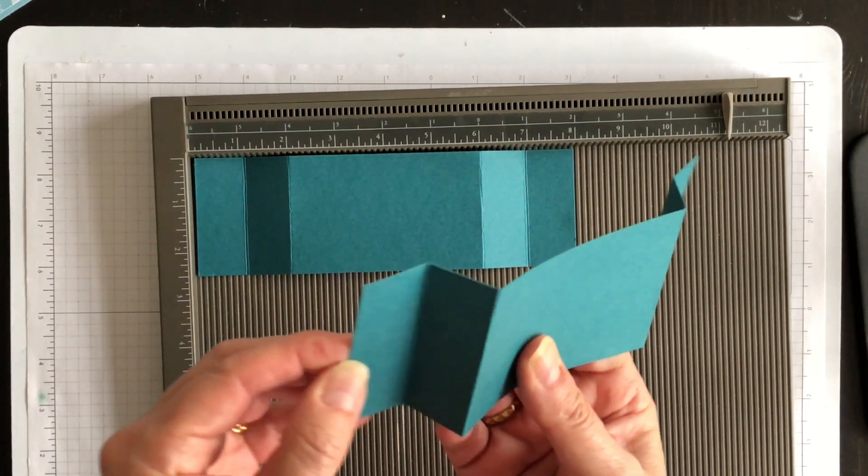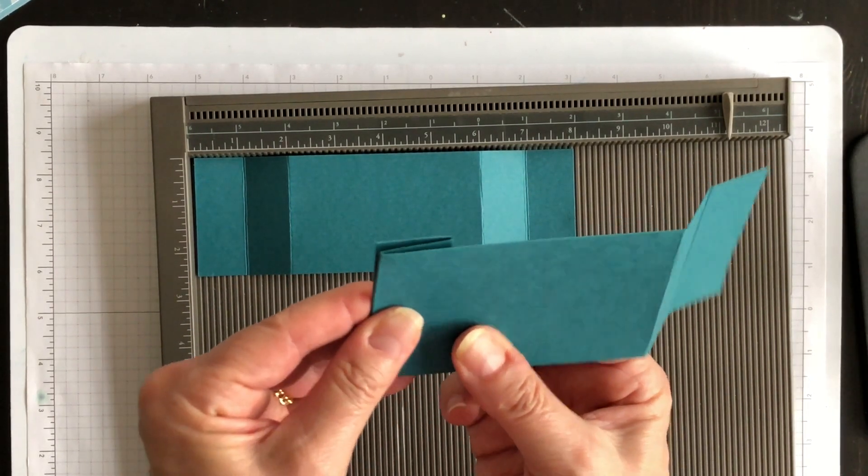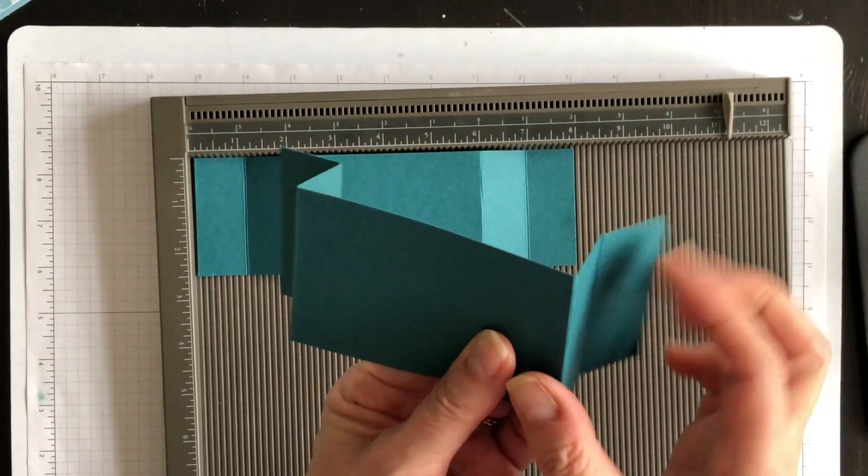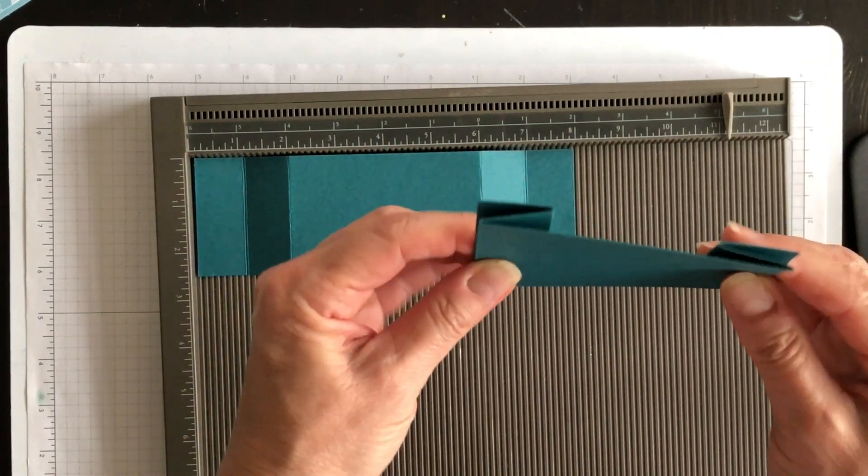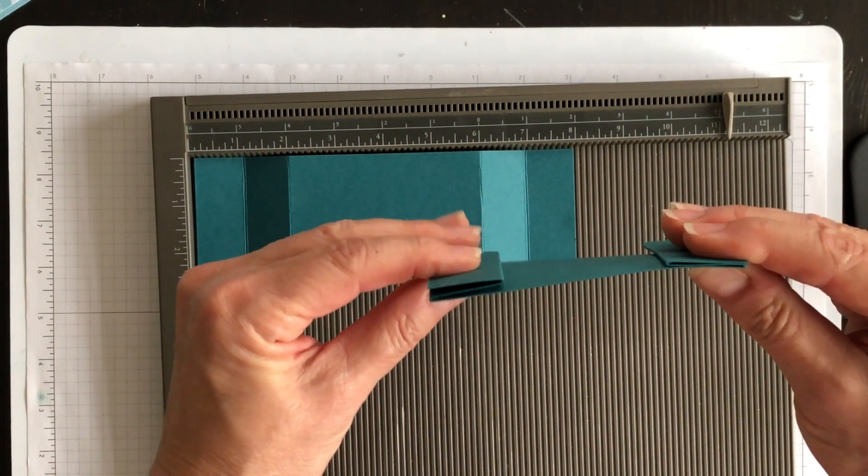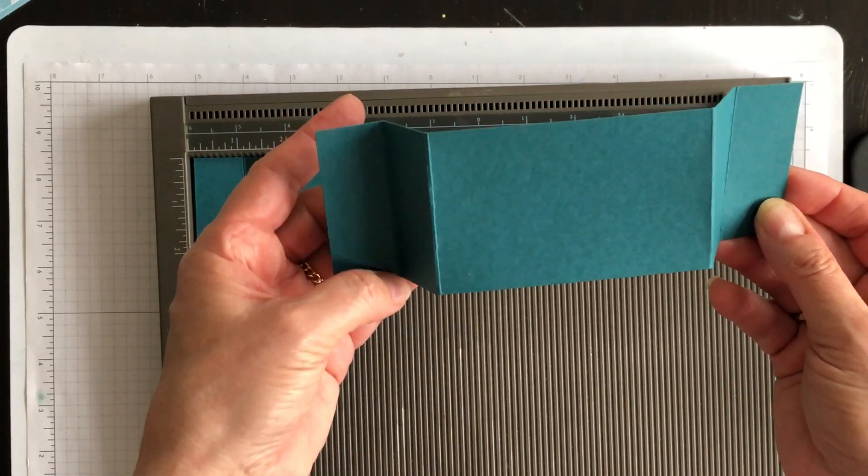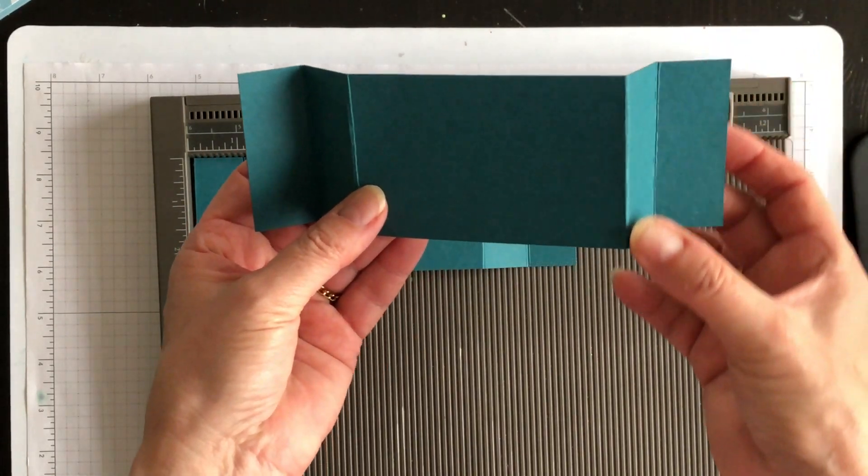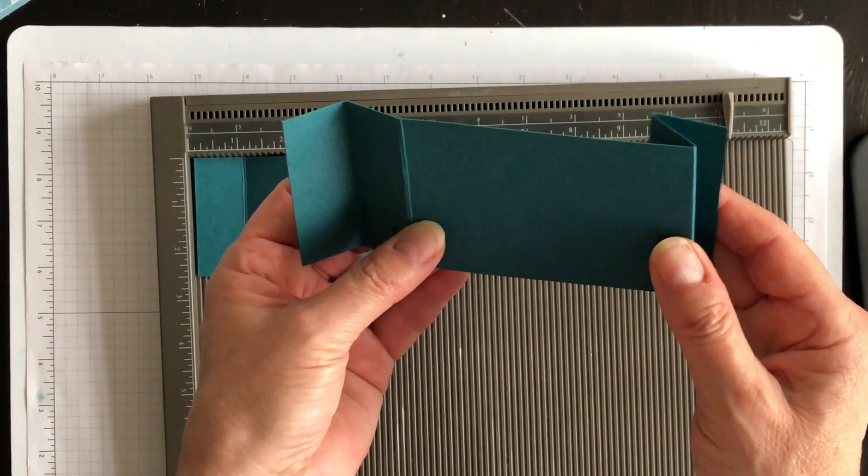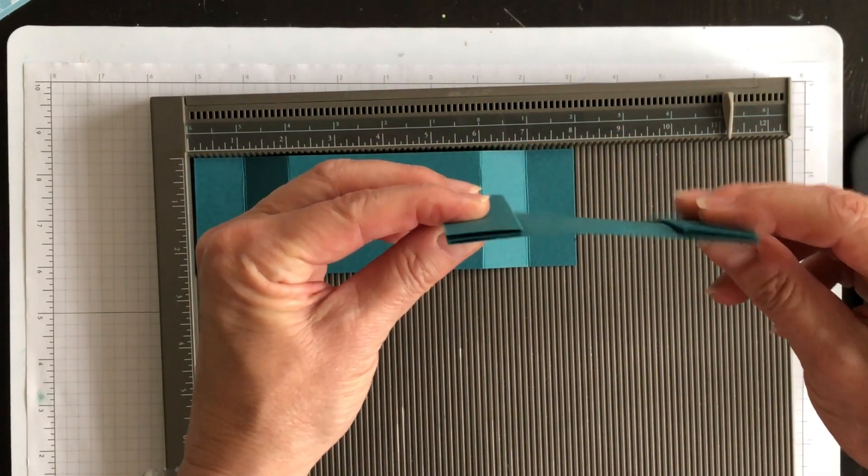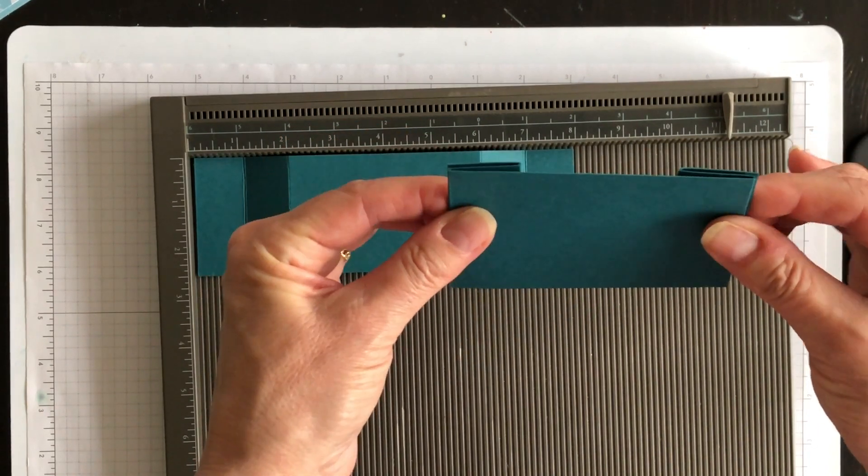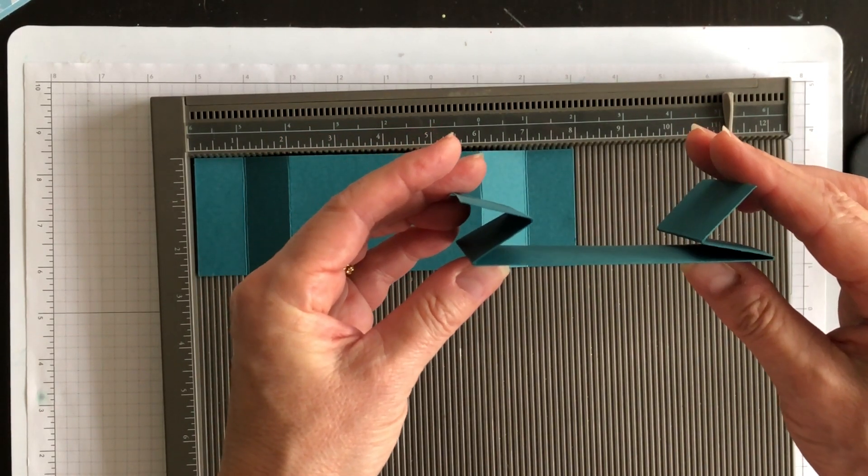And then for each one, you want to create a valley fold and a mountain fold, a mountain fold and a valley fold. So it ends up like that. So let me show you again. You've got a valley fold, a mountain fold, a mountain fold, and a valley fold. And you want it to have it look like that when it's done.